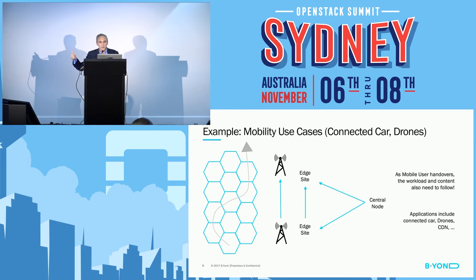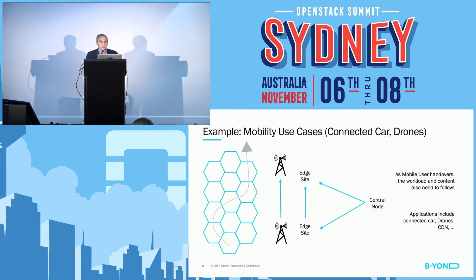But eventually, you may move far enough that the application running on the edge node — the content stored there and the state of that application — would need to be handed over to the edge node serving your new cell. How do you do that migration of the application, the content, and the state? That's not a simple task, especially over a backhaul network that may have much higher latency than what you'd find in a data center. That is an implication of running things at the edge instead of in a central node.